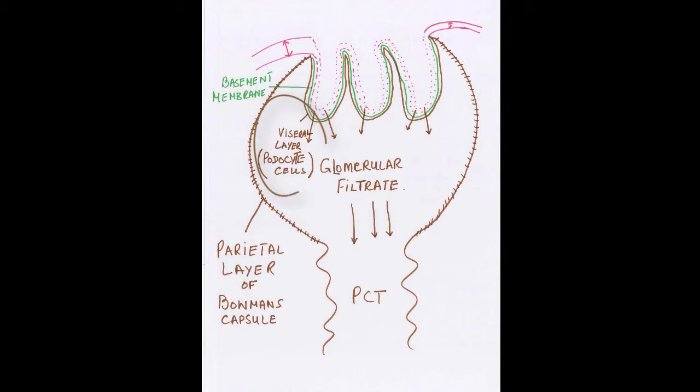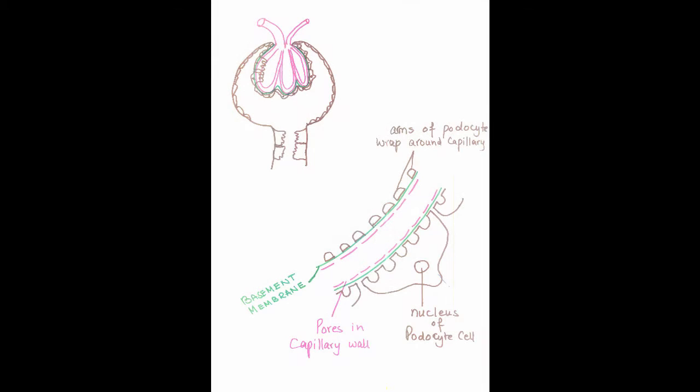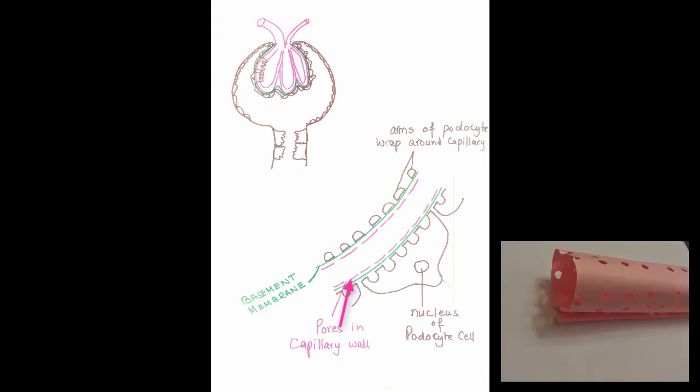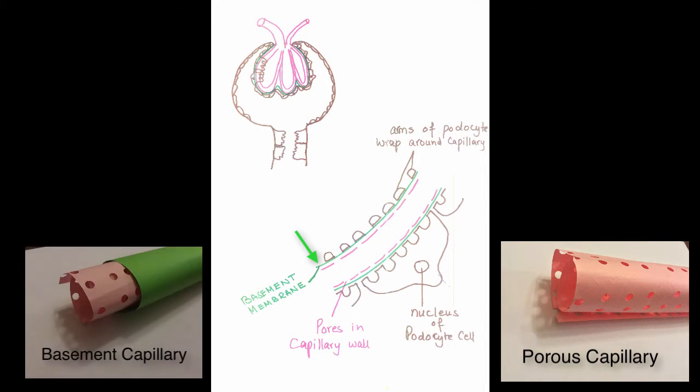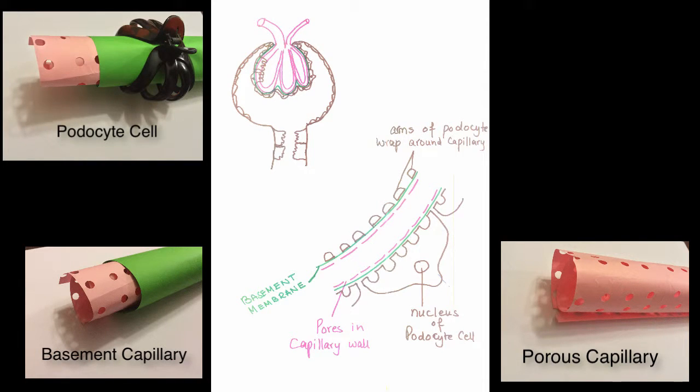As we look at the details, the capillaries have a lot of pores in them, and this allows fluid to pass. But the basement membrane prevents red blood cells and plasma proteins from passing out. The podocyte cells are very different in structure, and they support the glomerular capillaries.